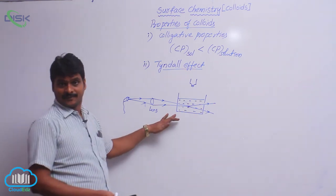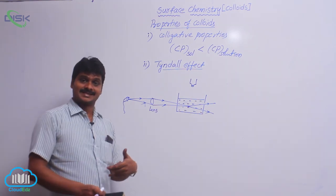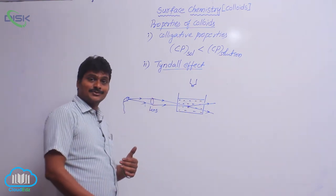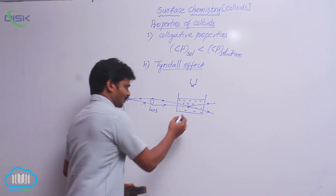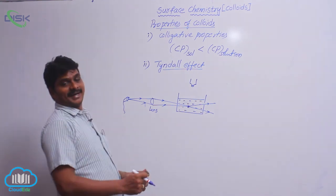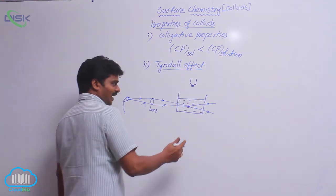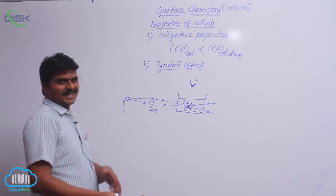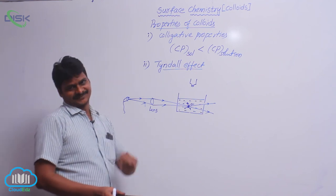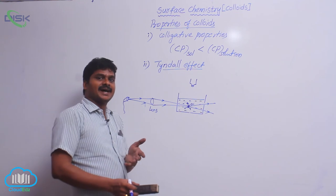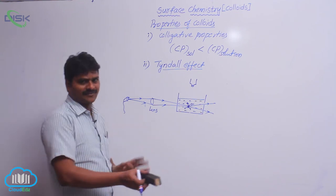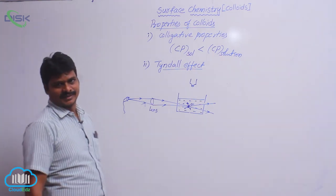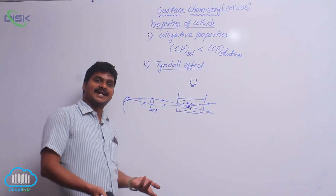That is why this type of phenomena exhibited by colloidal solution is called the Tyndall effect. The Tyndall effect is due to scattering of light by colloidal particles. Because colloidal particles are larger than the particles of solute in a true solution, when light falls on them, they scatter the light in all directions. Because of this scattering, the light beam is illuminated. This illumination of the light beam, observed at right angles to the direction of light by scattering of light by colloidal particles, is called the Tyndall effect.